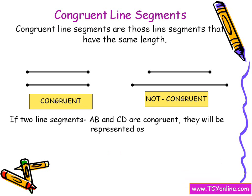So if two line segments AB and CD are congruent, it will always be represented as AB is congruent to CD, where this is the symbol of congruency.